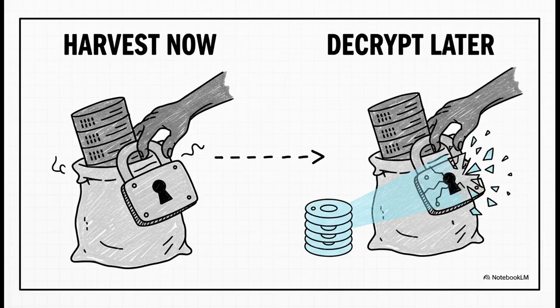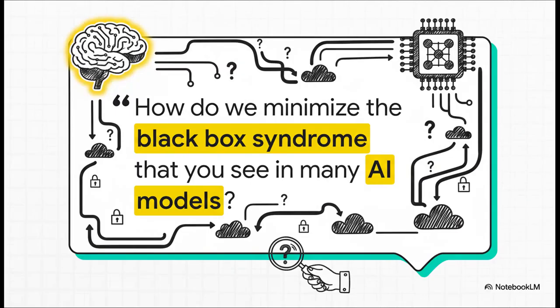And then there's this, the long-term security nightmare. It's called Harvest Now, Decrypt Later. And it is a huge deal. The basic idea is that bad actors can steal our encrypted data right now, today, and just sit on it. They'll just store it, waiting for the day when a quantum computer is powerful enough to crack today's encryption like it's nothing. And suddenly, all those secrets are wide open. That's why the race for quantum-safe cryptography is so incredibly urgent.